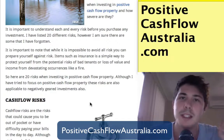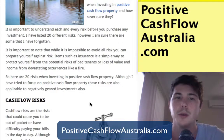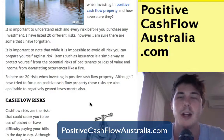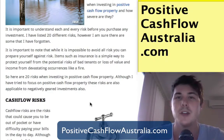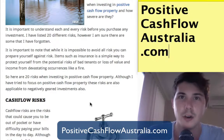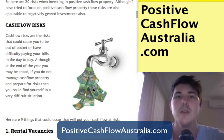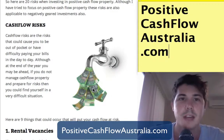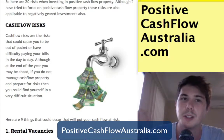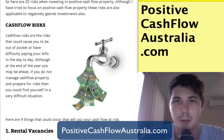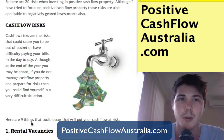It's important to note that while it's absolutely impossible to avoid all risks, you can prepare yourself against them. Items such as insurance are a simple way to protect yourself from potential risks such as bad tenants, loss of income, or devastating occurrences like fires. These 20 risks apply to positive cash flow property, although they're generally also applicable to negatively geared properties as well.